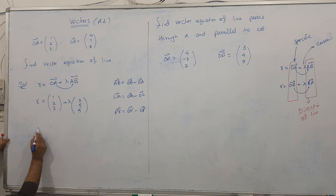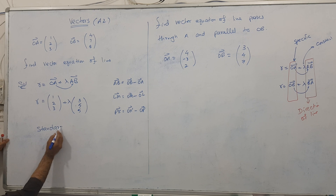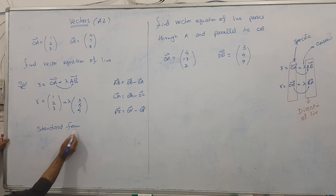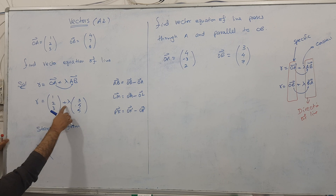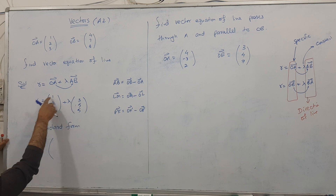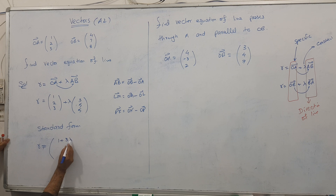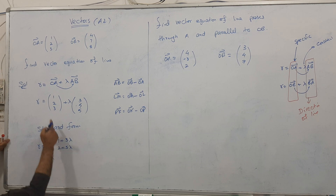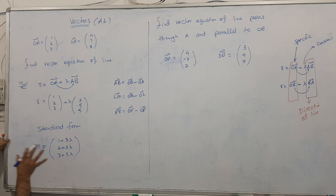Sometimes the question asks you to convert into standard form. To write the standard form, multiply lambda into the direction vector using i, j, k components: i with i gives 1 + 3λ, j with j gives 2 + 5λ, and k with k gives 3 + 5λ.